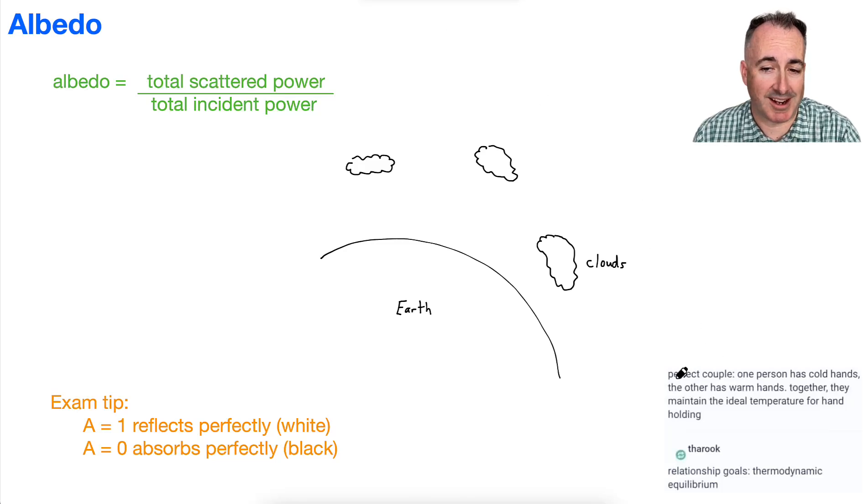The perfect couple. One person has cold hands, the other one has warm hands. Together they maintain the ideal temperature for hand-holding. I like this. Relationship goals. Thermodynamic equilibrium. I love it.